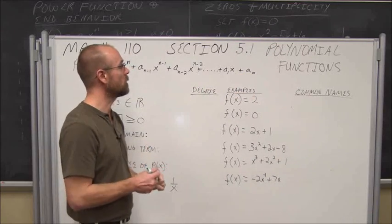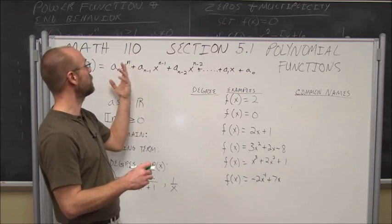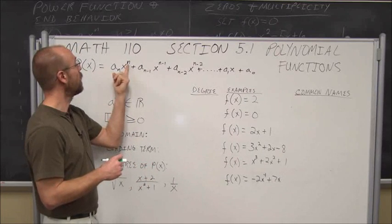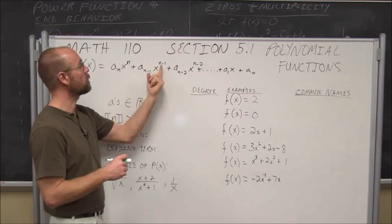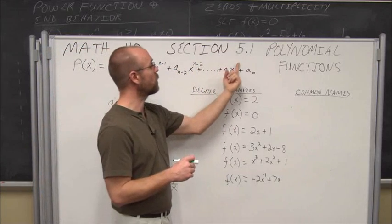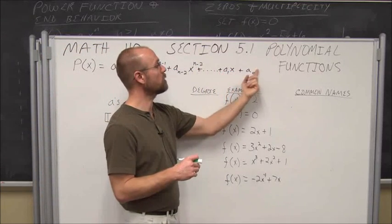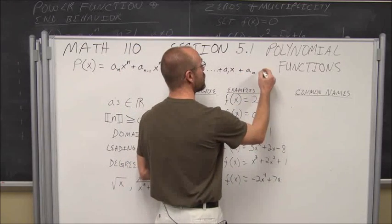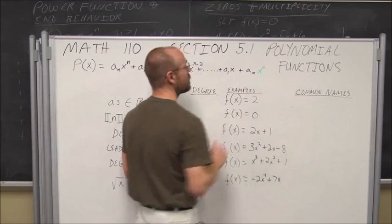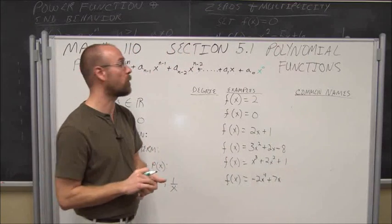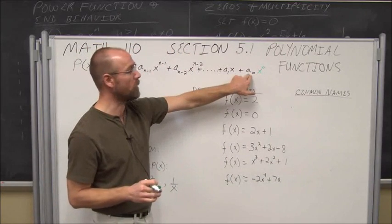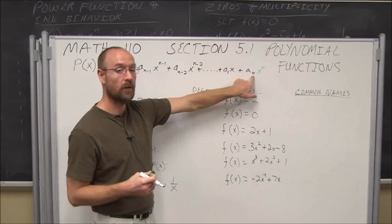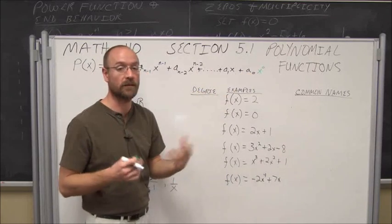Just for a moment, if we say n equals 4, then we'd have powers 4, 3, 2, and 1. What's the power of x at the constant term? We can introduce x to the 0 power, because anything to the 0 power is 1, making it just a constant. Notice it's a-sub-0, which indicates the power of that x is actually 0.